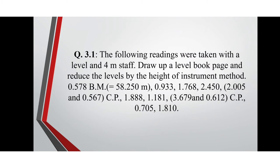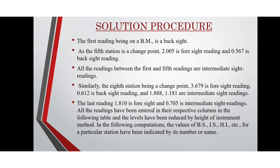Coming back to the question: the given observations include 0.578 as the starting point with a benchmark of 58.250 meters. There are two change points at the fifth and the eighth readings. The first reading being on a benchmark is the back sight. Since the fifth station is a change point, the reading 2.005 is the foresight reading and 0.567 is the back sight reading. All readings between the first and fifth are intermediate sight readings. Similarly, the eighth station being a change point, the reading 3.679 is the foresight, 0.612 is the back sight, and 1.888 and 1.181 are the intermediate sight readings. The last reading 1.810 is the foresight, and 0.705 is an intermediate sight reading. All readings have been entered in their respective columns in the following table.